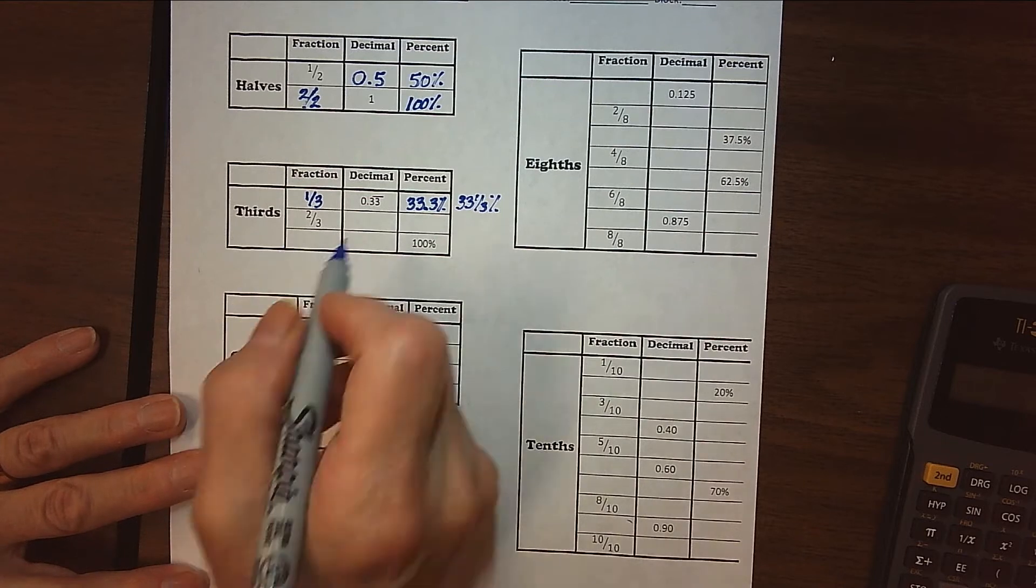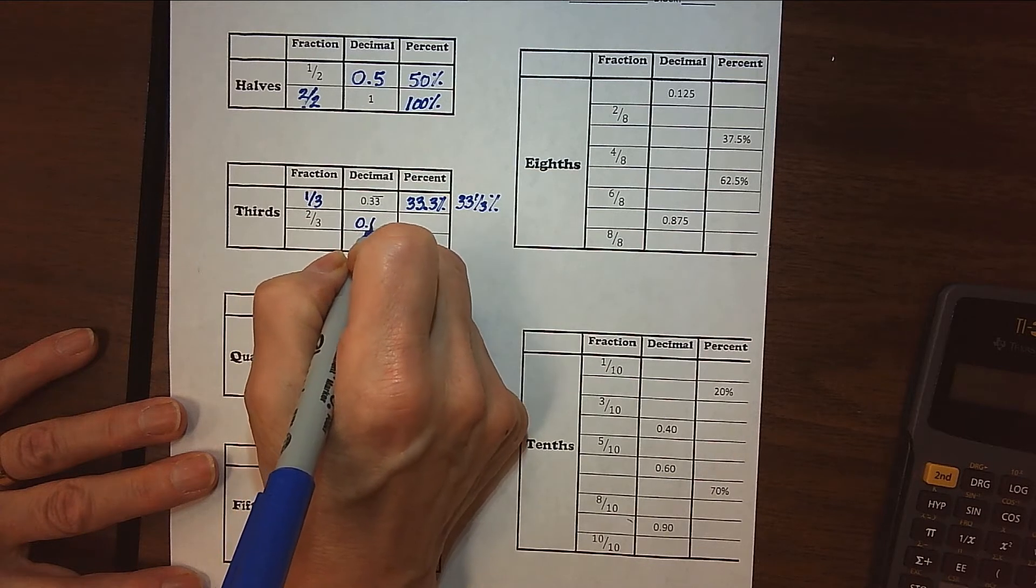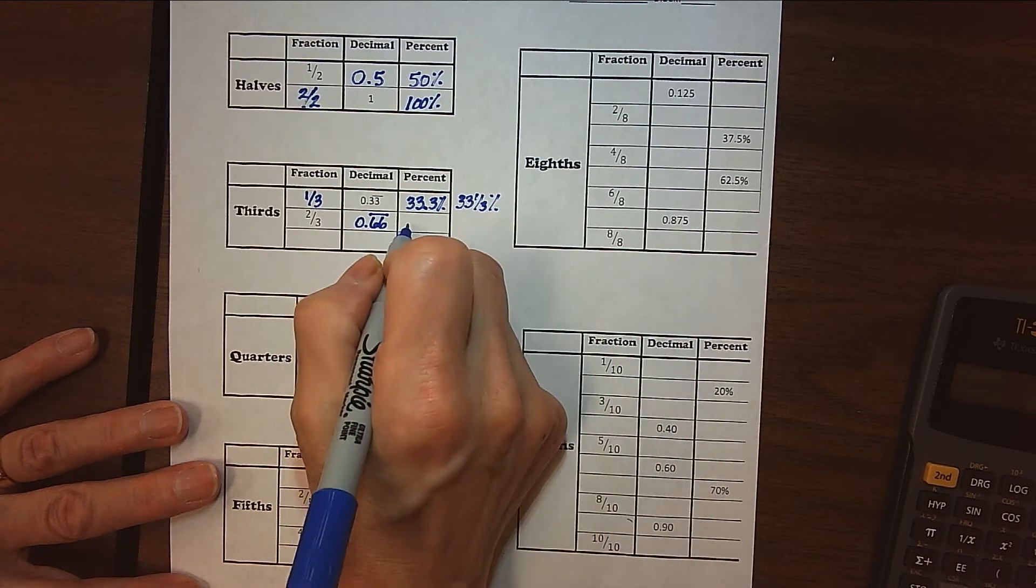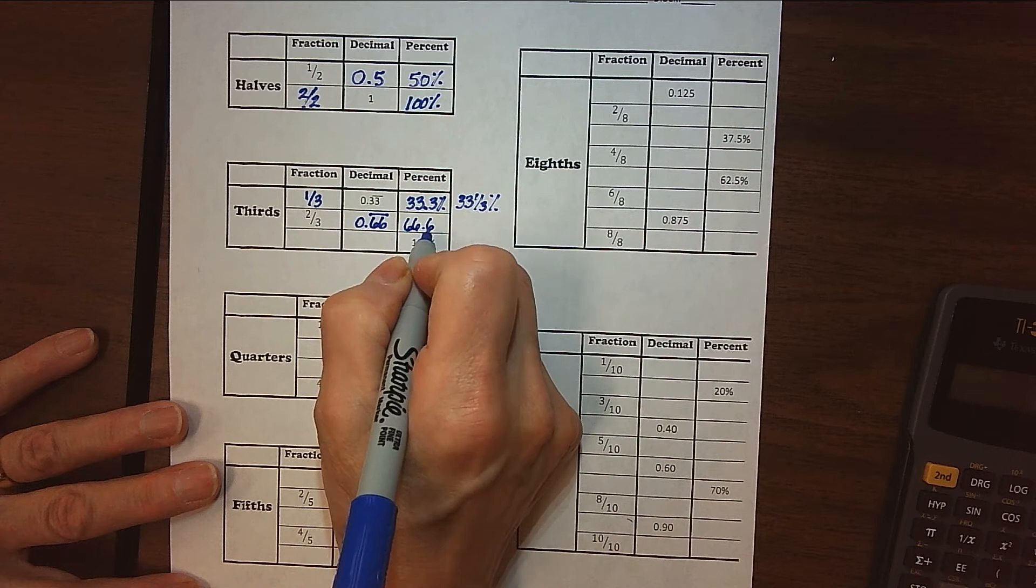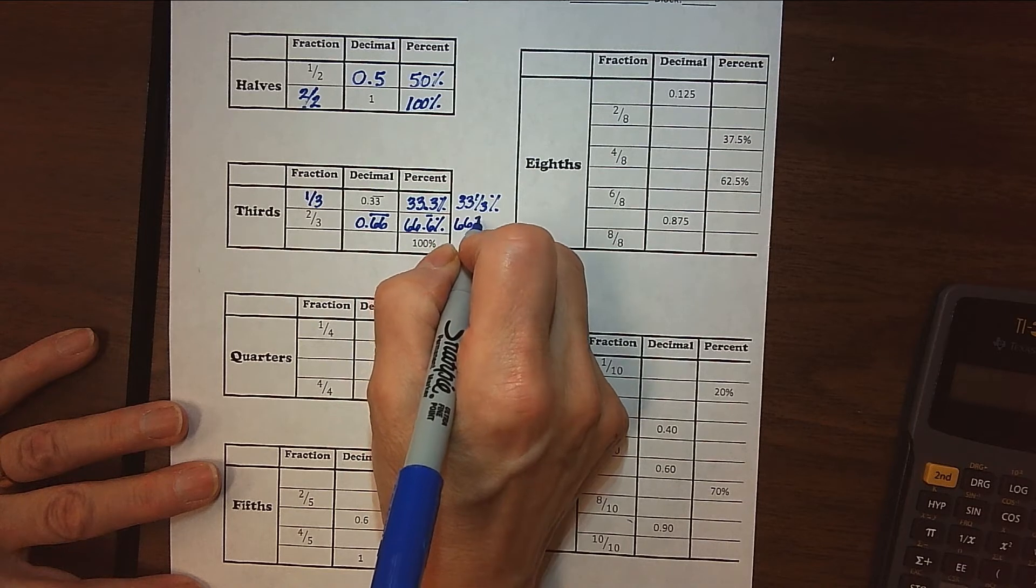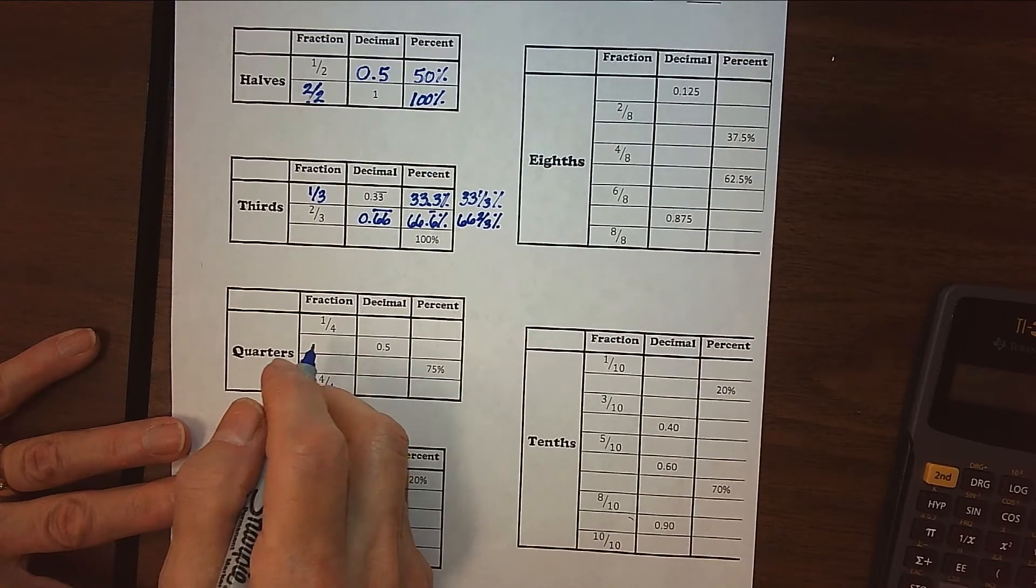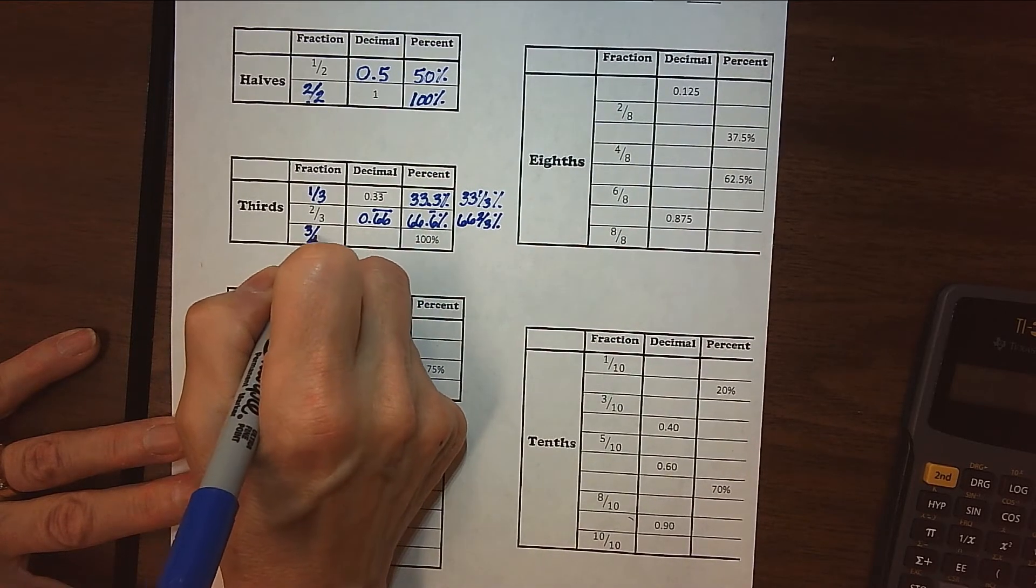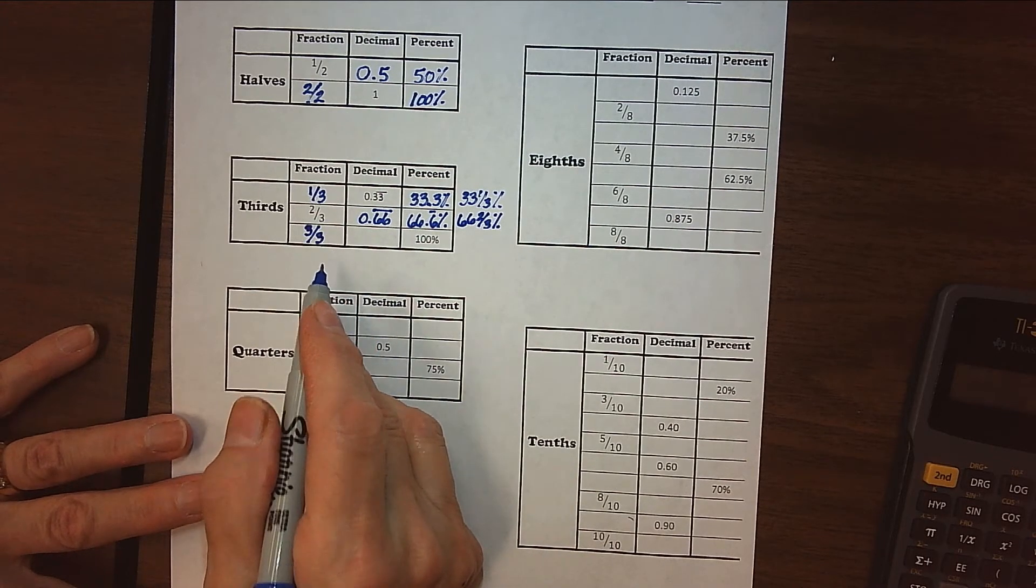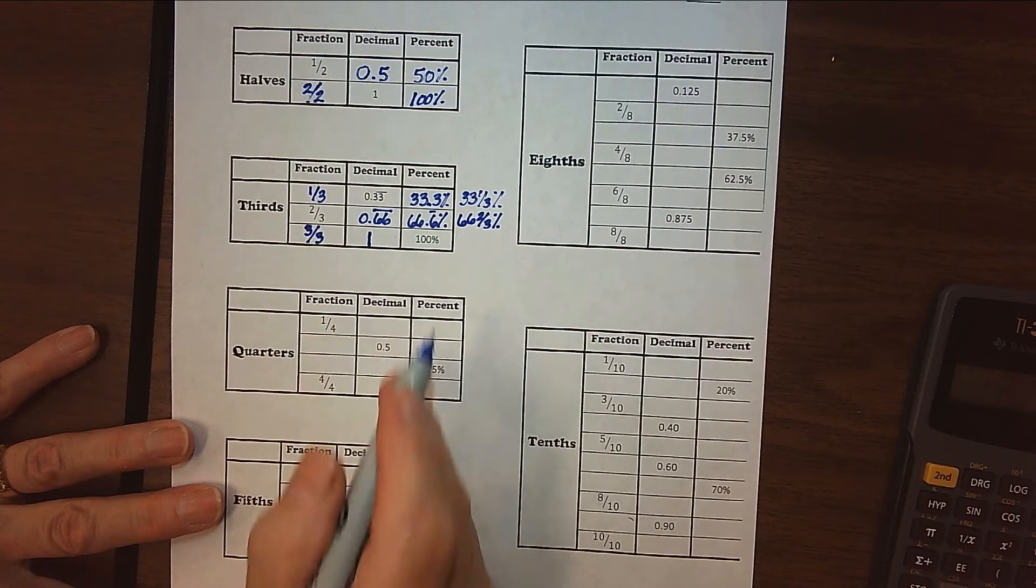Alright, and then 2 thirds, since 2 thirds is double 1 third, you might expect that this is going to be 0.66 repeating or 0.6 repeating. And that's 66.6 repeating percent. And again, that oftentimes will be written as 66 and 2 thirds percent. So again, if we're talking about thirds, the whole would be a 3 out of 3. That's a whole. If I had a candy bar and I cut it into 3 parts, 3 out of 3 would be the whole thing. And 3 out of 3 is one whole candy bar. And then 100% is all of it.